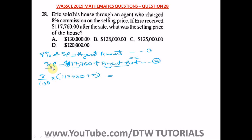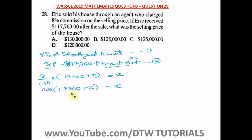We put the value of SP into equation one and open the bracket. 8 divided by 100 is 0.08, so we have 0.08 times (117,760 plus x) equals x. Opening up the bracket: 0.08 times 117,760 gives us 9,420.8, plus 0.08x equals x.